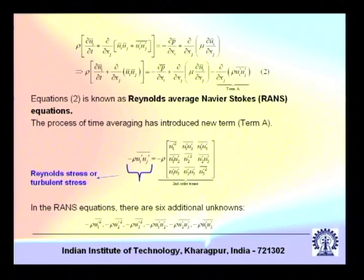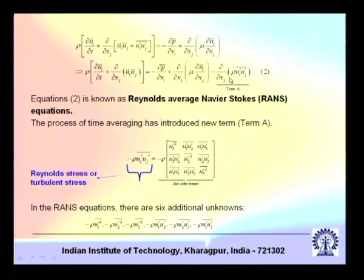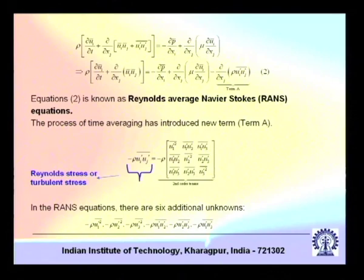This gives the governing equation in terms of the mean flow. It looks like rho times (del u_i-bar / del t + del/del x_j of u_i-bar u_j-bar) on the left-hand side. The form is the same as the original momentum equation, except there is an extra term on the right-hand side: del/del x_j of (−rho u_i-prime u_j-prime-bar), which we call term A. This process is known as Reynolds averaging.